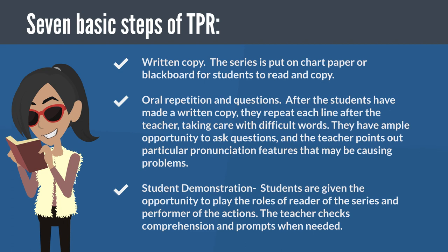Step 4 — Written Copy: The series is put on chart paper or blackboard for students to read and copy. Step 5 — Oral Repetition and Questions: After the students have made a written copy, they repeat each line after the teacher, taking care with difficult words. They have ample opportunity to ask questions, and the teacher points out particular pronunciation features that may be causing problems.